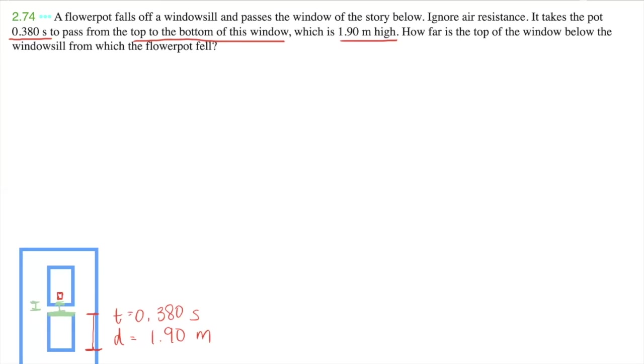So now let's write down our knowns and unknowns. There are five parameters we have for both these parts. So let's start from red. For this portion, we know that the time is 0.380 seconds. We know that the distance is 1.90 meters. And we know that the acceleration is due to gravity. So it's going to be negative 9.80 meters per second squared.